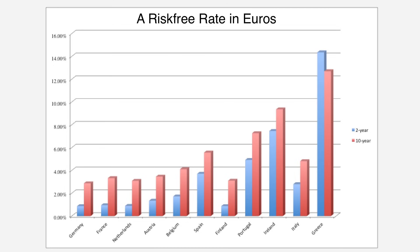Now let's move one step up the difficulty ladder. Suppose you're valuing a company in euros — you want a euro risk-free rate. Let's go find some government bonds denominated in euros. I found too many: a dozen European governments all issuing 10-year bonds, all denominated in euros, and the rates are all different. These are not the 1990s where the French government had franc bonds and the German government had deutschmark bonds — these are all euro bonds. The only reason these rates are different is because the market perceives some of these governments as having default risk. If you want a euro risk-free rate, I would use the German 10-year government bond rate — not because it's German, but because it's the lowest of those 10-year government bond rates, getting as close as possible to a default-free rate.